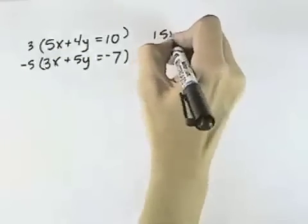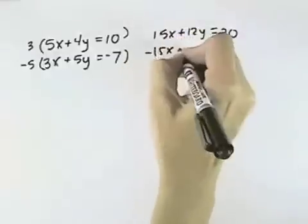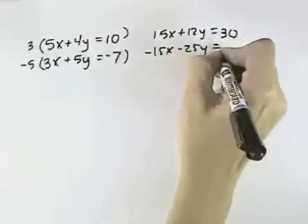When I do that, the top equation becomes 15x plus 12y equals 30. The bottom equation becomes negative 15x minus 25y equals 35.